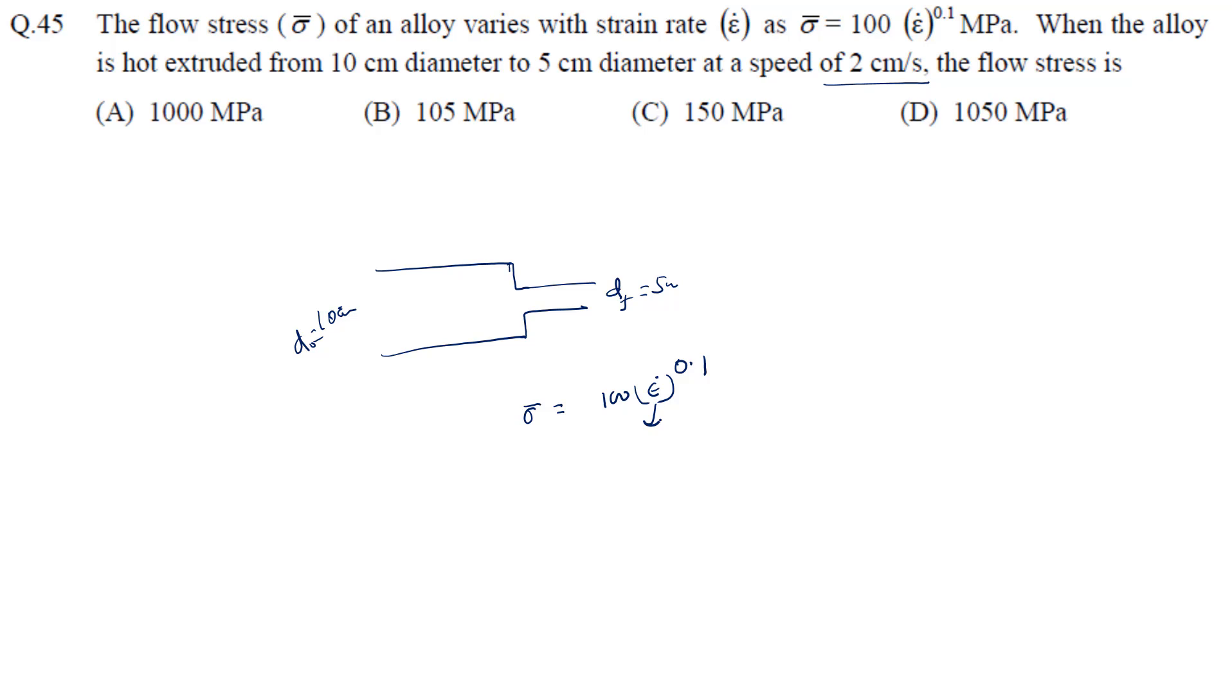The strain rate is 6V ln R by d naught, where d naught is initial diameter. You can find this in the data book page 628. Strain rate equals 6 times v times r divided by d naught. R is the reduction ratio, a naught by af, which is d naught square by df square.